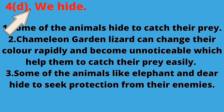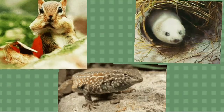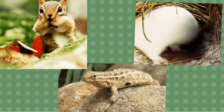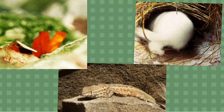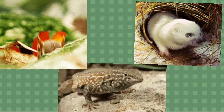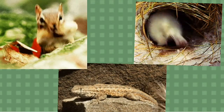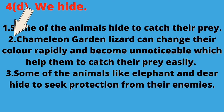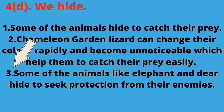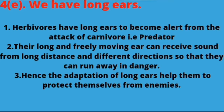The next statement is: we hide. Why do animals hide? Animals hide either to protect themselves or to catch prey. Answer: (1) Some animals hide to catch their prey — chameleons and garden lizards can change their color rapidly and become unnoticeable, which helps them catch prey easily. (2) Some animals like elephants and deer hide to seek protection from their enemies.